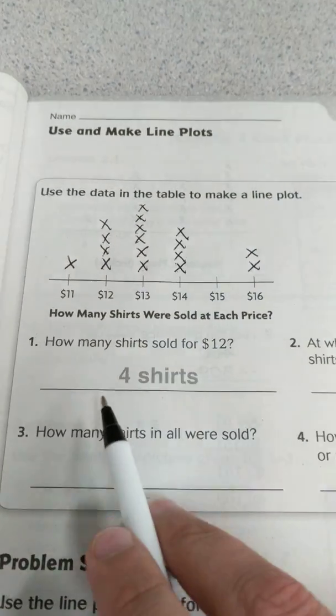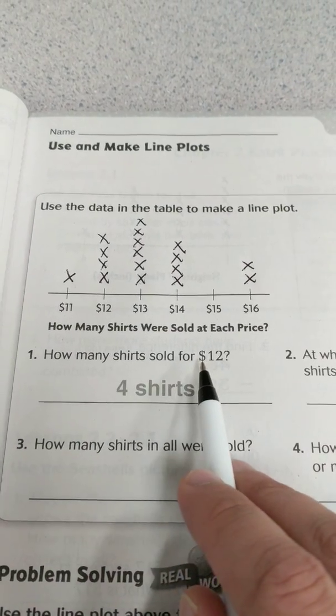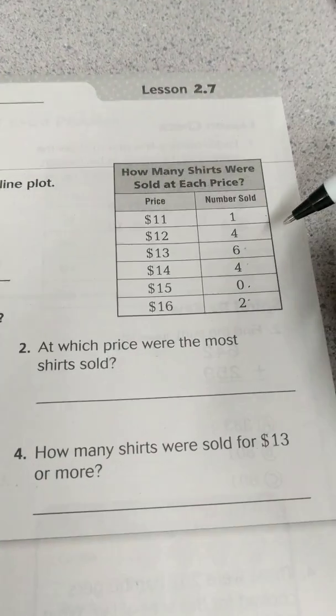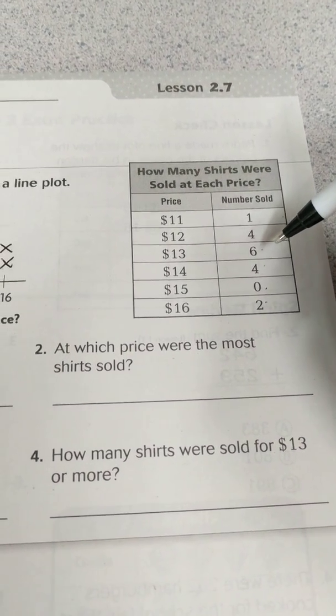So they've done the first one for you. How many shirts sold for $12? And we look over here: 1, 2, 3, 4. It's also shown on the table over here.